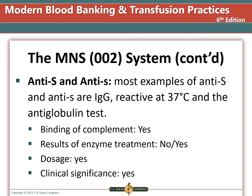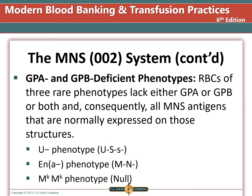Both anti-Big S and anti-s are IgG, react at 37°C and the anti-human globulin phase, do not bind complement, may or may not react with enzyme-treated cells, show dosage, and can cause hemolytic transfusion reactions — making them clinically significant. When cells lack both glycophorin A and B, this is a rare null phenotype lacking all MNS antigens. U-negative lacks the portion of glycophorin B closest to the membrane, so no S or s antigens are present. ENA-negative individuals lack glycophorin A and do not express M or N antigens.